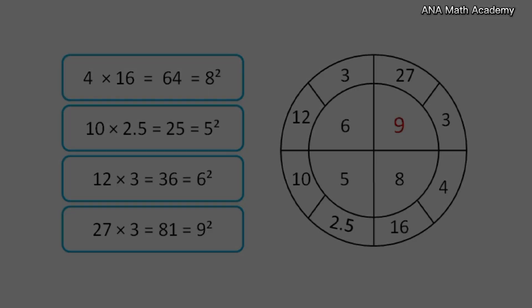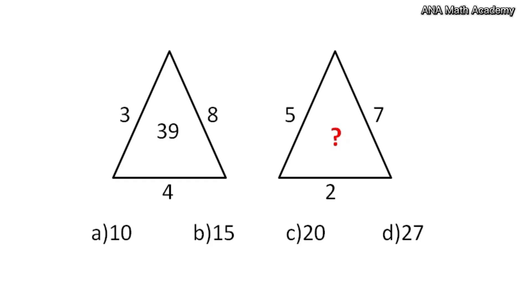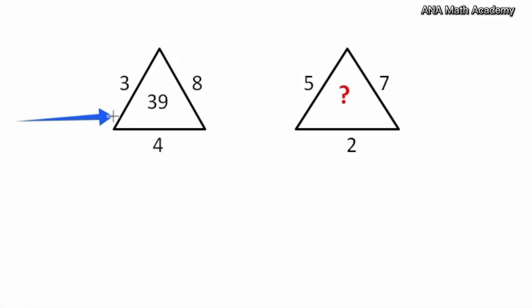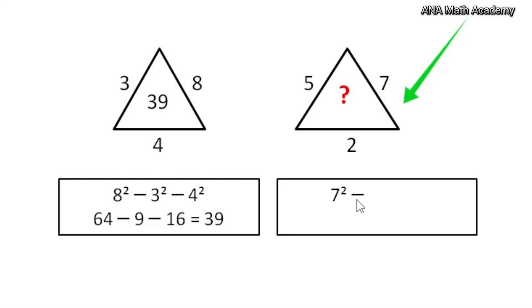Now let's move on to the next question. In this puzzle we are given two triangles. Each triangle has four numbers, but we need to understand the pattern we used in the first triangle and apply it to solve the second one. Let's look at the used pattern: take the largest number and square it, then subtract the squares of the other two numbers. Now we will apply the same pattern also in the second triangle. Our largest number is 7, so 7 square minus 5 square minus 2 square. Our answer is 20. Did you also get the same answer?